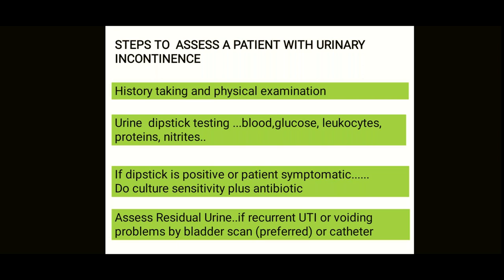The first and most important investigation is urine dipstick testing, where you test for blood, glucose, leukocytes, proteins, nitrites — everything. If the dipstick is positive or the patient is symptomatic, go for culture and give antibiotics. This is summarized step-by-step so it can serve as a revision source — but do read the actual NICE guidance first.